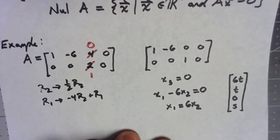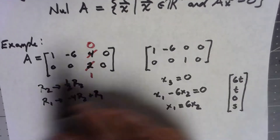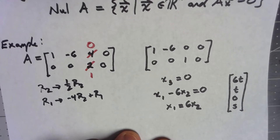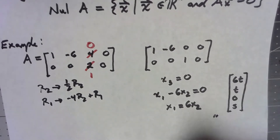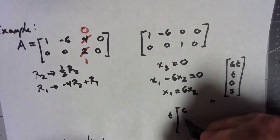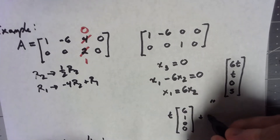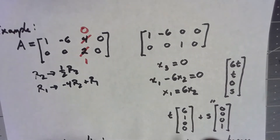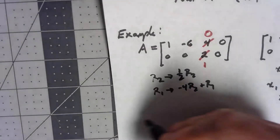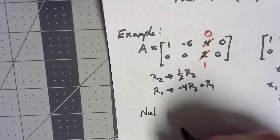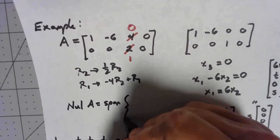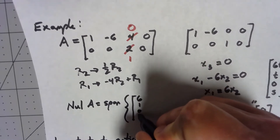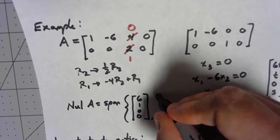Solutions are of the form: x3 equals 0, x2 equals t (free parameter), and x1 equals 6t, with x4 equals s. We can write this vector as t times (6, 1, 0, 0) plus s times (0, 0, 0, 1). So the null space of this matrix is the span of the two vectors (6, 1, 0, 0) and (0, 0, 0, 1).